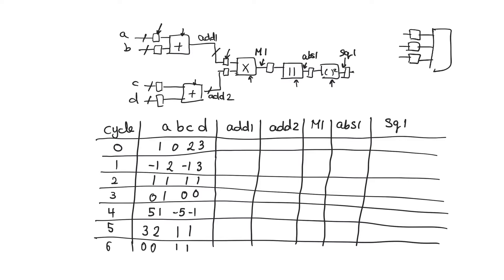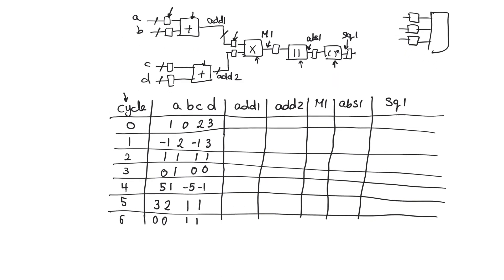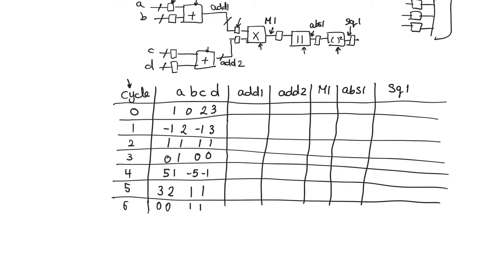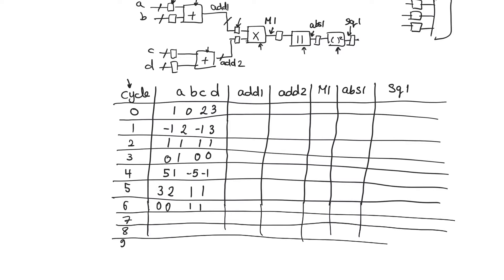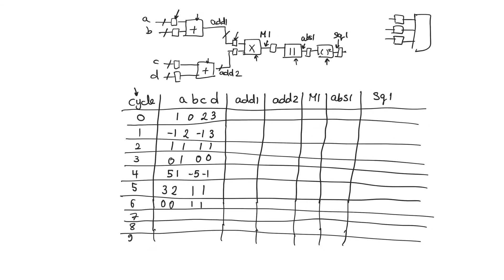What we want to do is examine at every clock cycle. The first column in this table is the clock cycle number. We will consider outputs from clock cycle zero, which is the beginning of operation, all the way down to cycles seven, eight, and nine. We want to examine the values of nodes A, B, C, and D — the inputs to the overall circuit — and count in cycles what the values will be at nodes add one, add two, M1, EPS1, and square one.